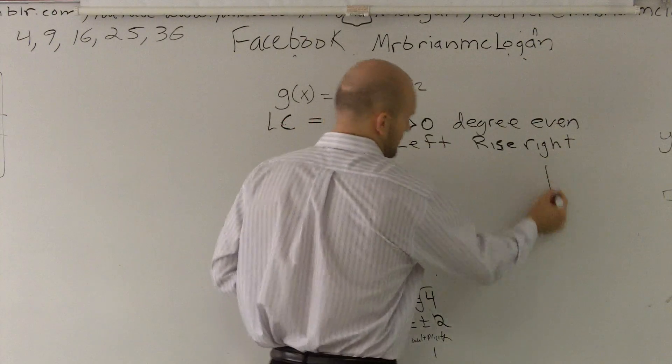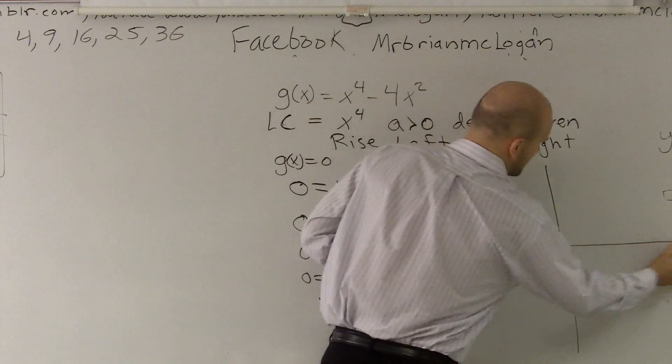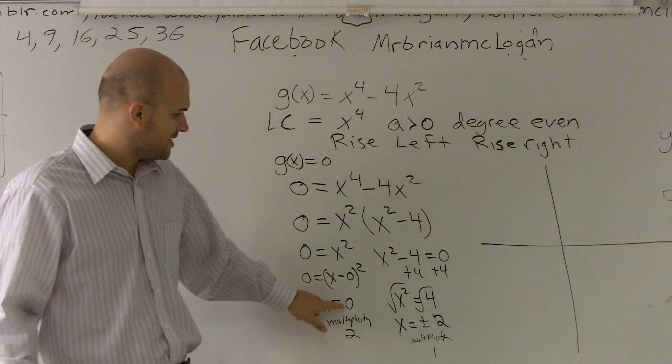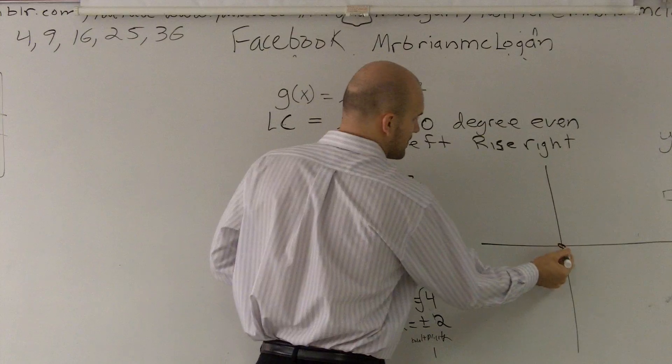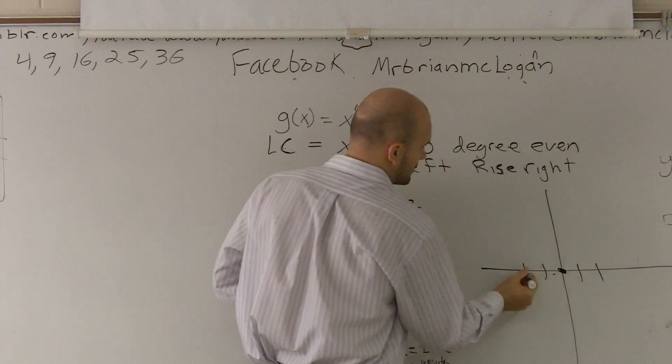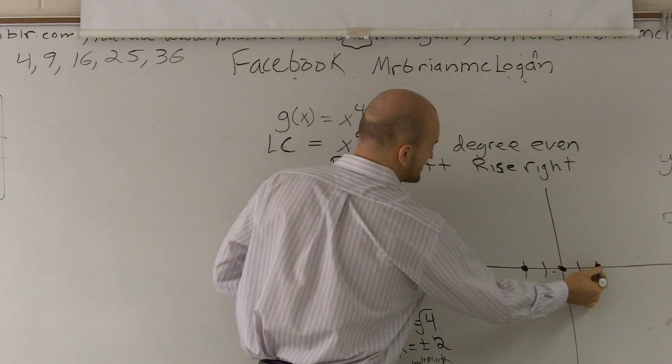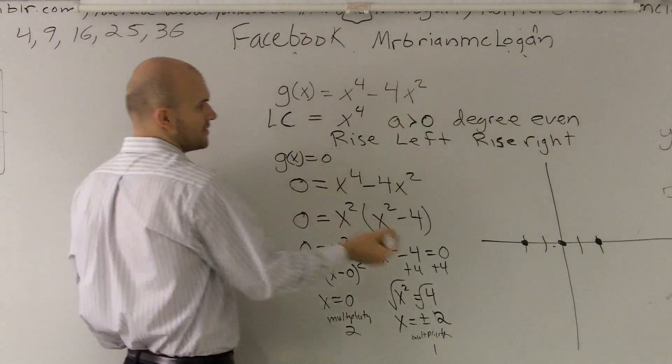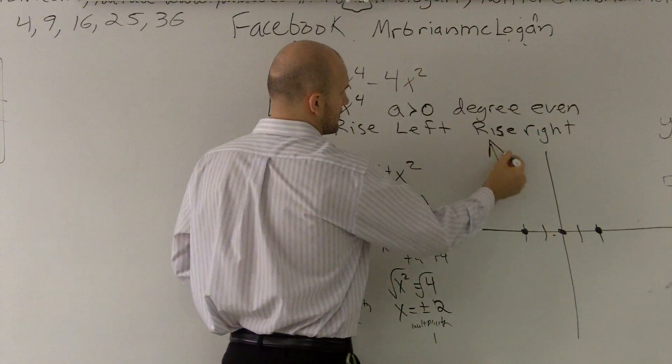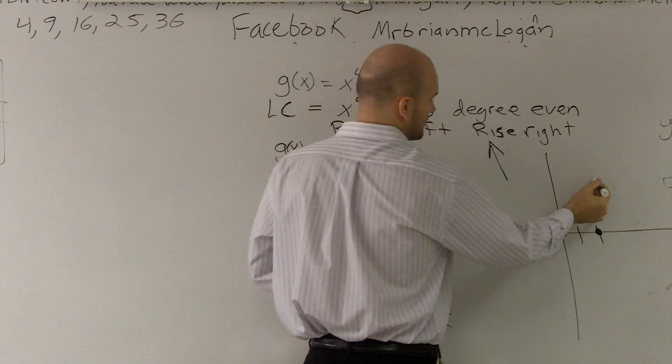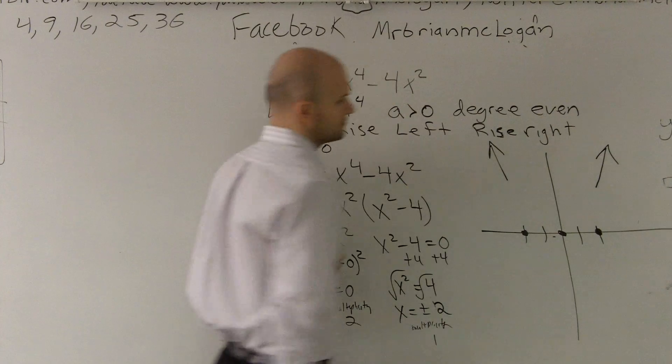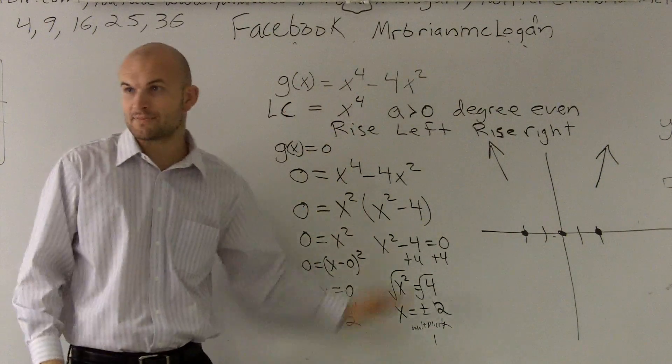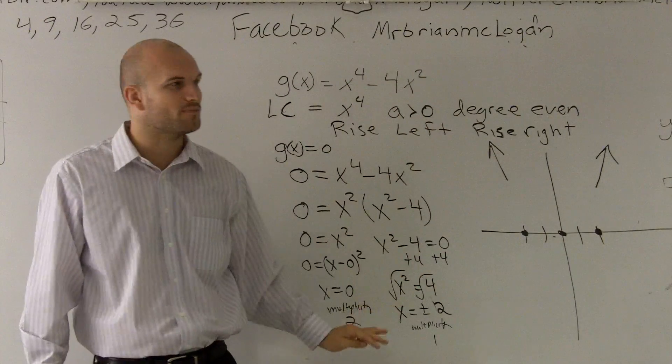So we're graphing it. First thing we want to do is we want to apply our points. We know we have a point at 0, 0, negative 2, and positive 2. We know our end behavior. It's going to rise to the left and rise to the right. So that's all we know right now. That's from the earlier part of the chapter. Everybody should be able to do this for every single problem.